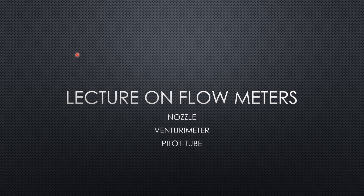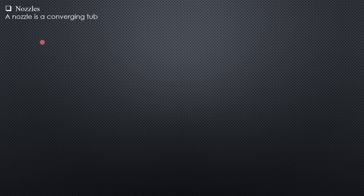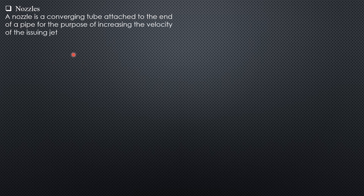In this video, we will lecture on flow measuring devices such as nozzles, Venturi meters, and Pitot tubes. A nozzle is a converging tube attached to the end of a pipe for the purpose of increasing the velocity of the issuing jet — that is the main purpose.